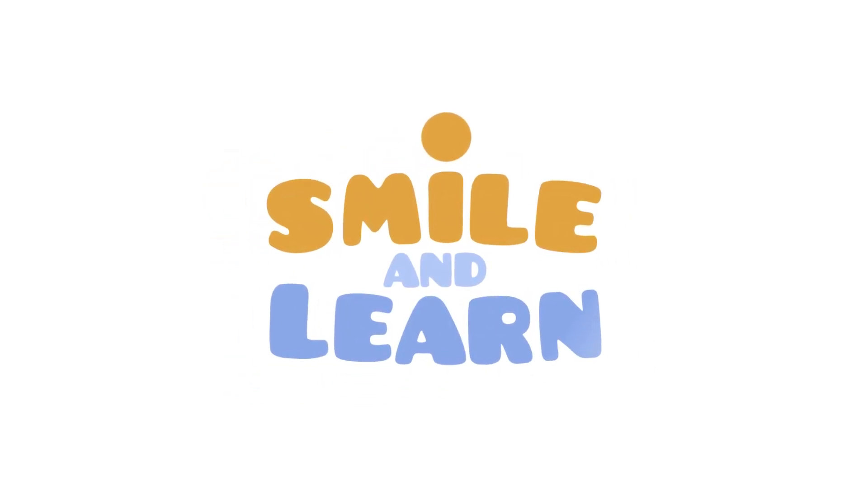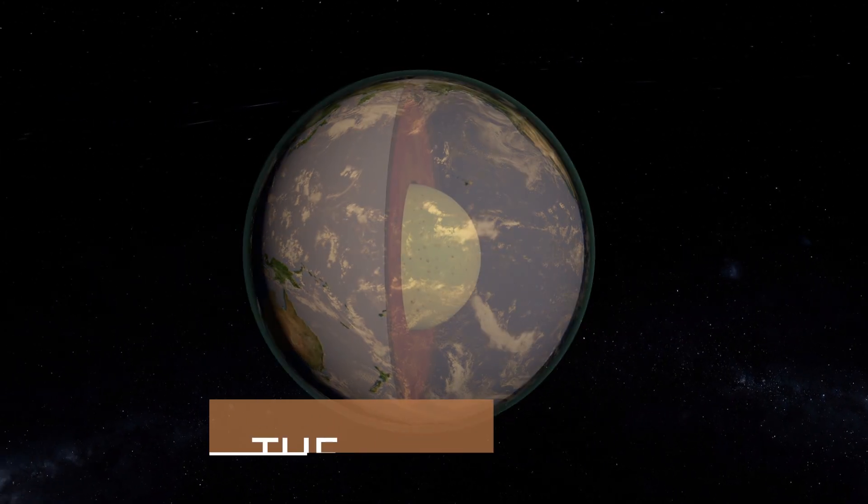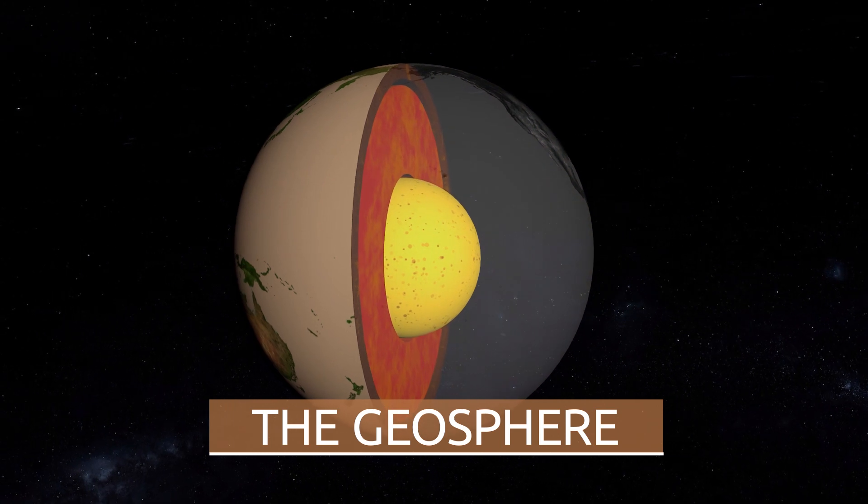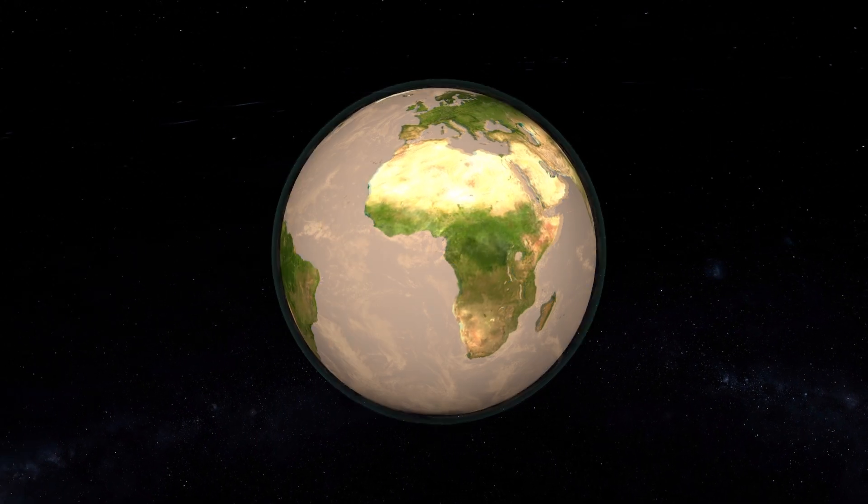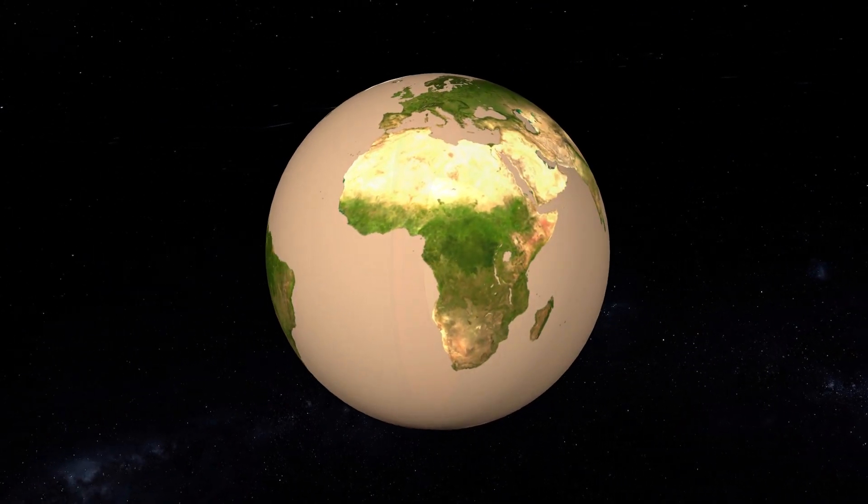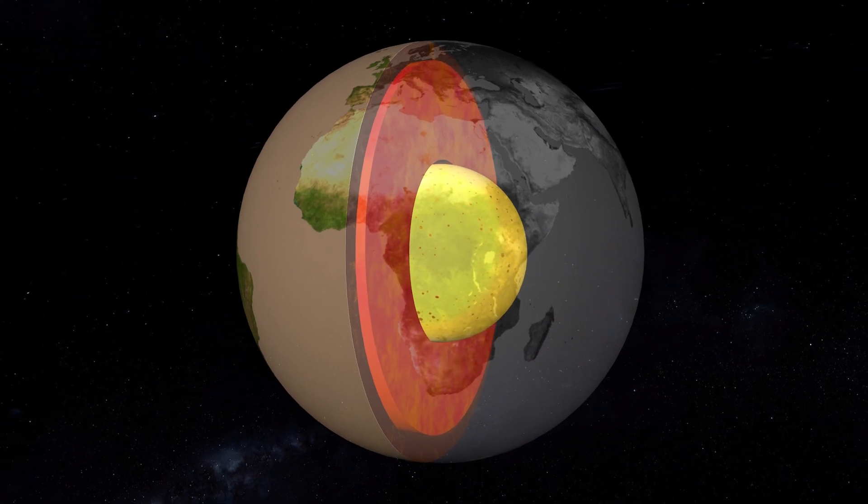Today we're going to learn about the geosphere. The geosphere is the inner layer of the Earth extending from its surface to the inner core of the planet. This layer is made up of solid rock and habitable ground.